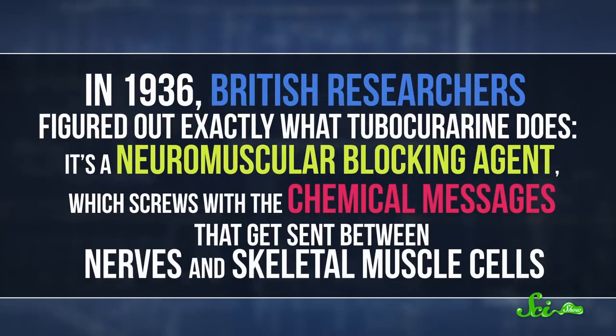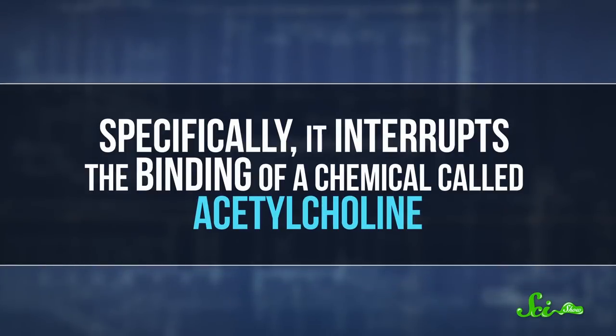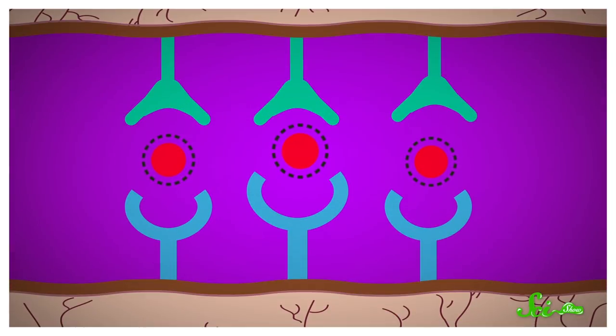It's a neuromuscular blocking agent, which screws with the chemical messages that get sent between nerves and skeletal muscle cells. Specifically, it interrupts the binding of a chemical called acetylcholine. Normally, acetylcholine binding sets off a chain of events that lets certain charged ions cross muscle cell membranes, which generates an electric current and makes a muscle contract.